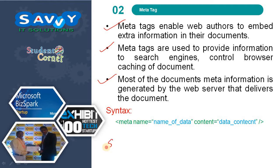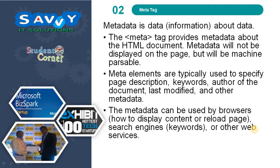Using the meta tag we can also do search engine optimization, SEO. The syntax is: the tag is meta, name is equal to the name of the data, and content is equal to the data content we need to provide. Metadata is data about data. The meta tag provides metadata about the HTML document.